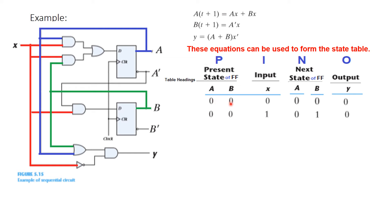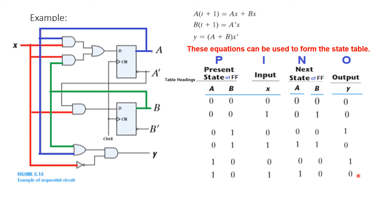This was for the 0,0 present state. We will consider all four states: 0,0 then 0,1 then 1,0 and finally 1,1. For each, we keep X = 0 and X = 1, and apply the same technique to calculate the next state A, B and output Y. This gives the complete state table.